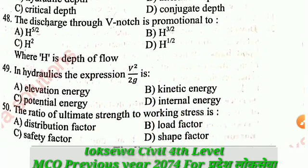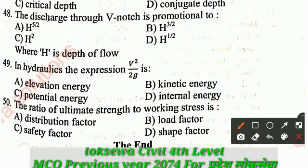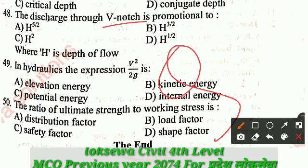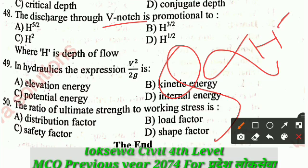Question number 48: The discharge through a V-notch is proportional to H^(5/2), where H is the head of water over the notch.